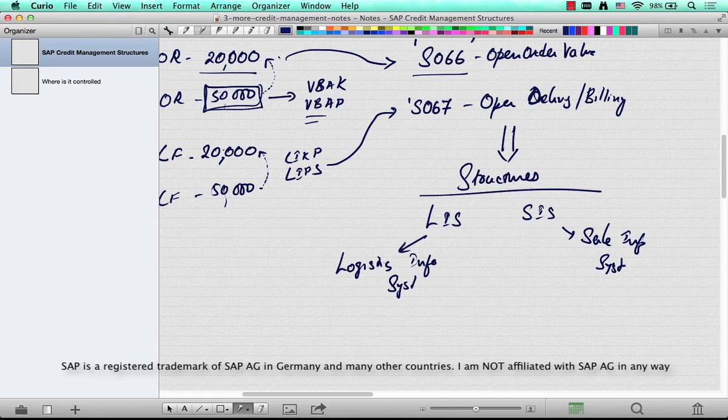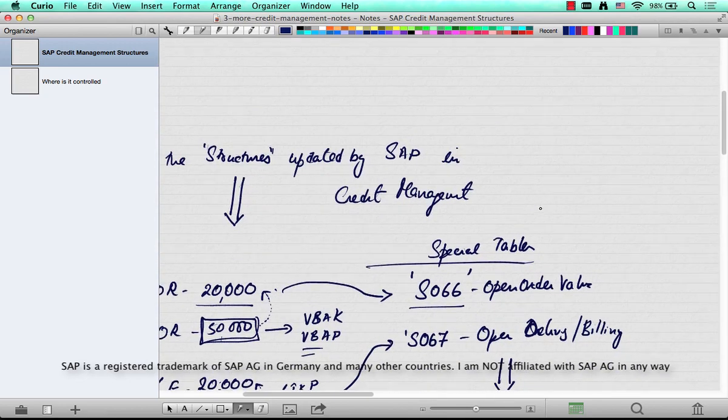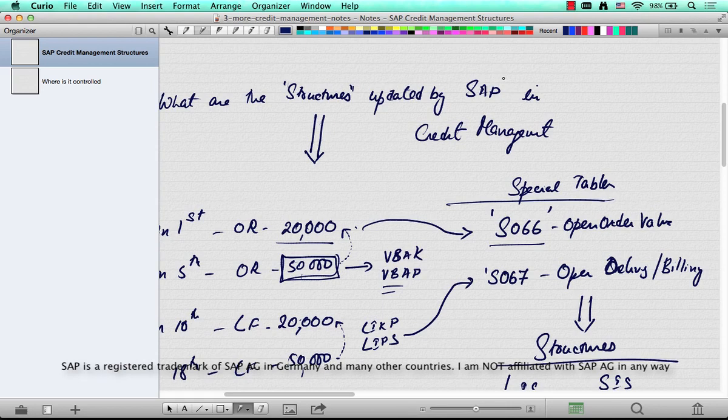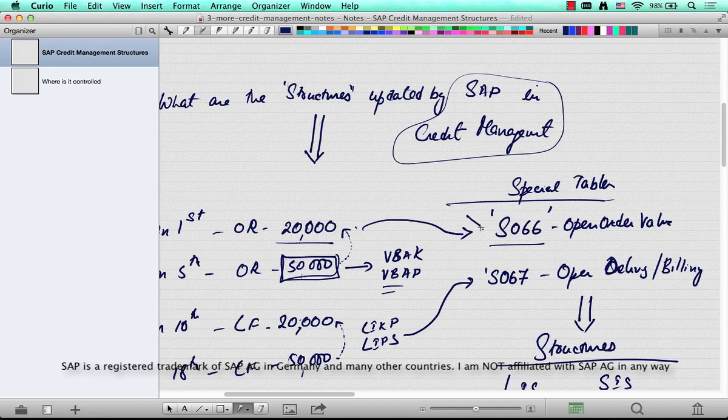So the answer to this question, 'What are the structures updated by SAP in credit management?' is S066 and S067. Now you can as well go to SC16 and view the contents of this table.